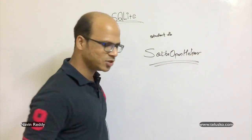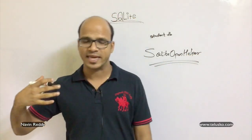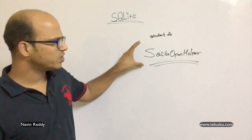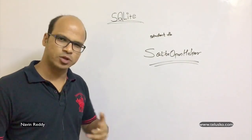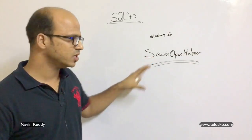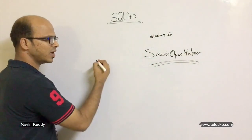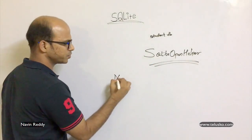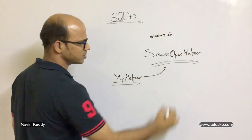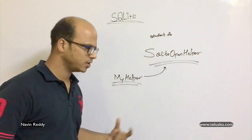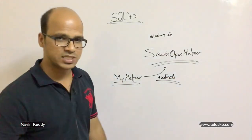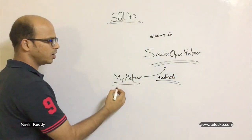Linking your application with the database is possible with the help of a class called SQLiteOpenHelper — and trust me, this is the actual helper. Using this you can get the database, create a database, and do all those things. It already has some methods like onCreate and onUpgrade, so you don't use those classes directly.